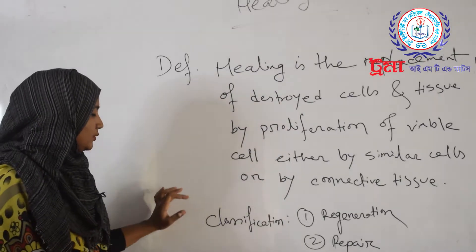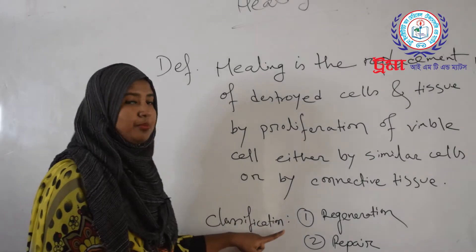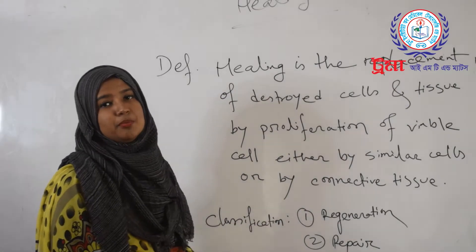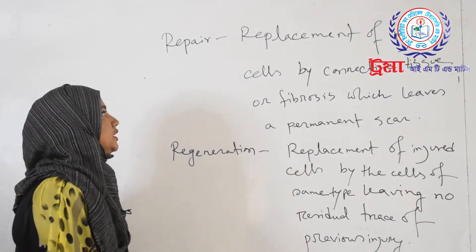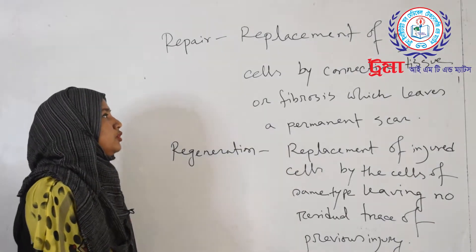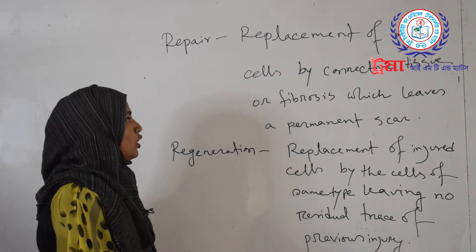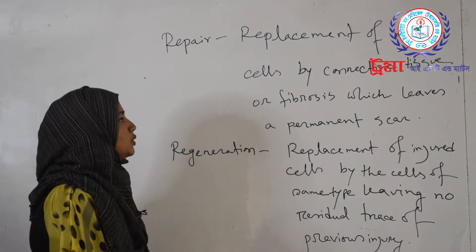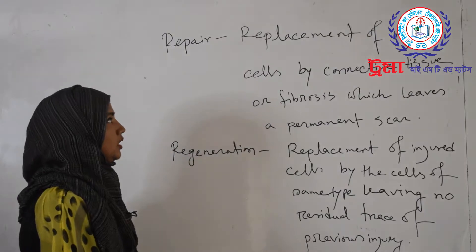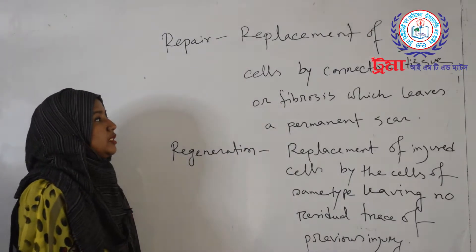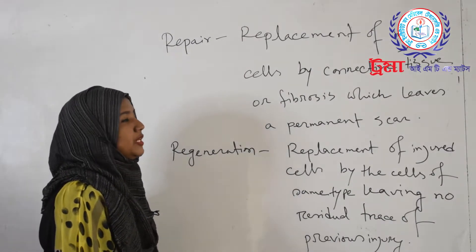I'm going to talk about the classification. The classification has two parts: repair and regeneration. Repair is the replacement of the injured cell by connective tissue or fibrosis, which is a permanent scar — injured cell replaced by connective tissue via fibrosis.